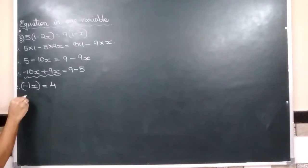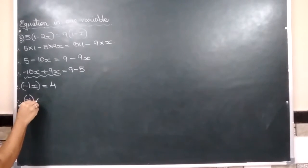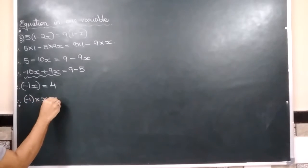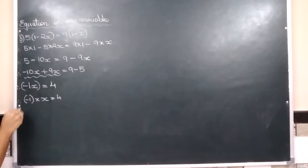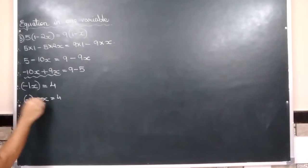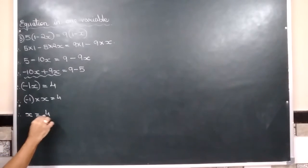So you will be writing it as like this. Negative 1 multiplied by x is equals to 4. Number multiplied with the variable always becomes the denominator. 4 upon negative 1.